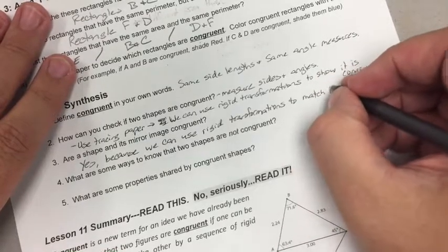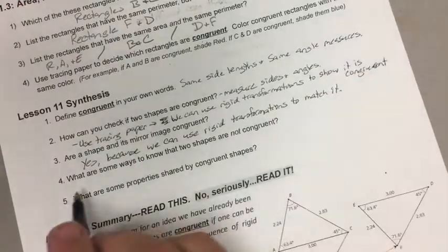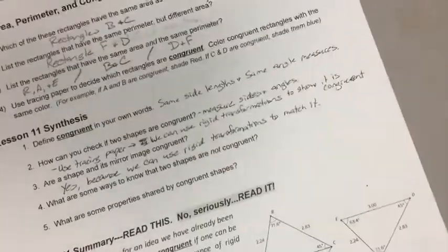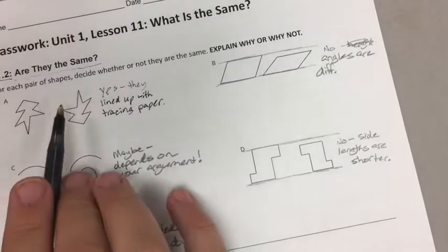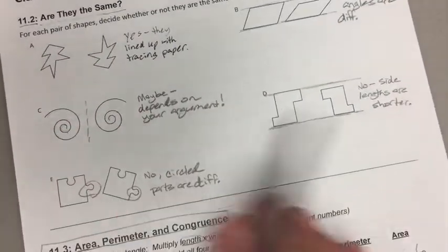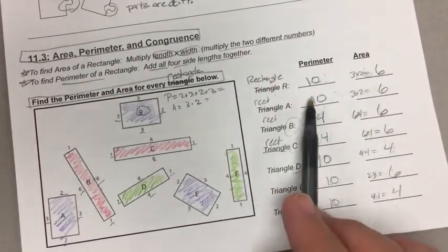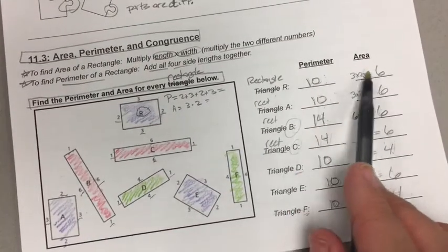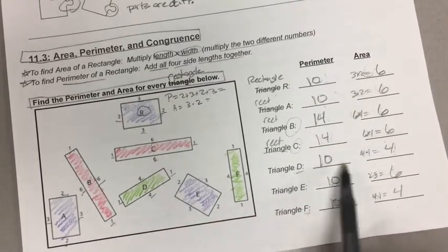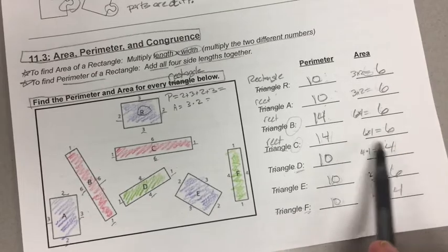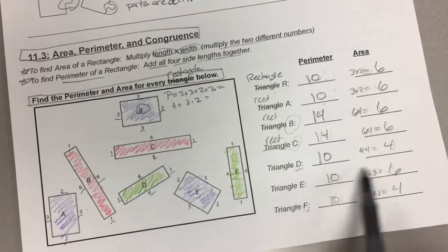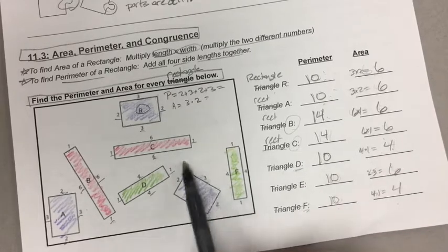What are some ways you know that two shapes are not congruent? We went through this exercise where we used tracing paper. That's one way to tell. We could measure. But another way is if they have the same perimeter but not the same area, they're not congruent. Like these two, E and D - those are not congruent because they have different areas.